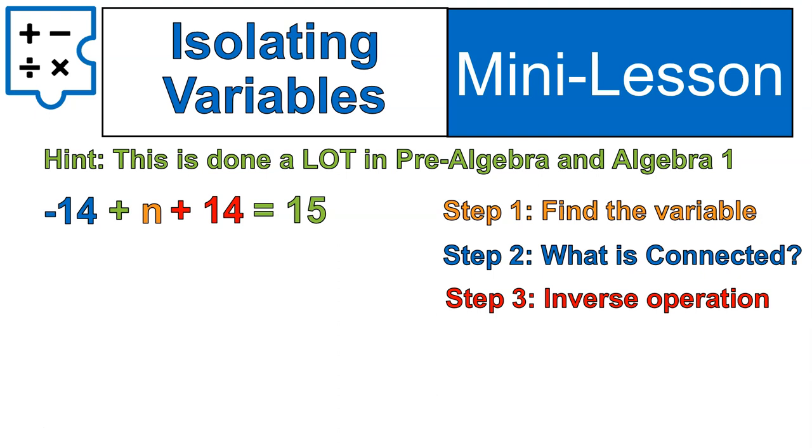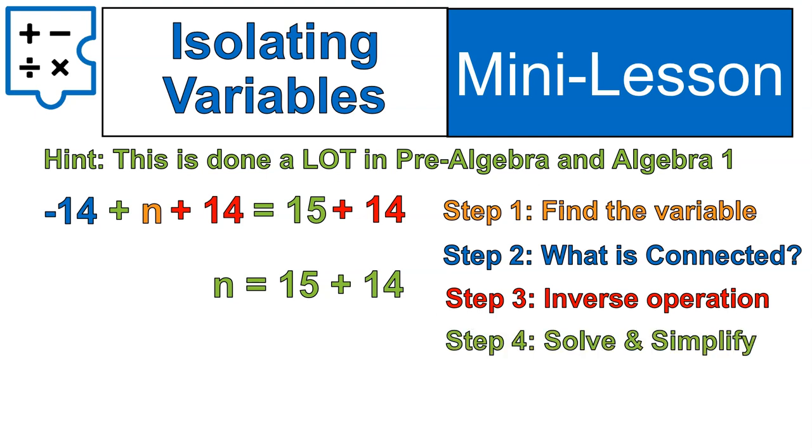What this does is called isolating my variable. I'm going to get n all by itself. If I have negative 14 plus 14, I'll end up with zero. So I just end up with n on the left side of the equal sign. But the thing with doing this is you can't just add 14 to one side of the equation. You have to add it to both sides. So that step three is that you do the inverse operation to both sides of the equation. That gets your n by itself, right? Because we talked about negative 14, positive 14. They basically cancel each other out. They give you zero. So they're gone. And then we have 15 plus 14.